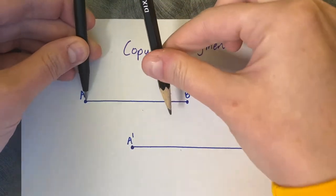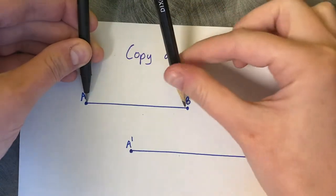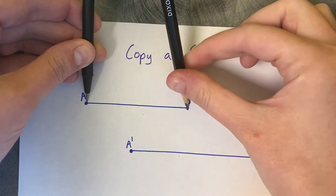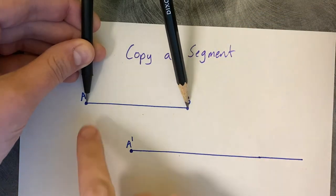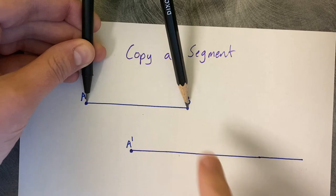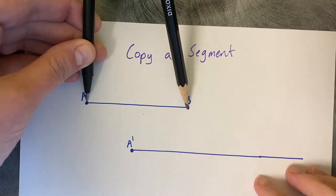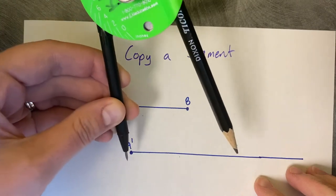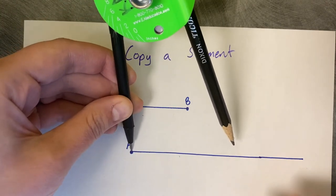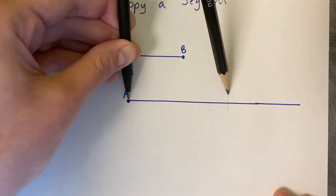Open your compass to the length of the segment so that it matches. Put your anchor on one end and open your marker or pencil up to the other end. Now don't change the size of your compass. Move your anchor down to A', where you would like it to go, and swing an arc.